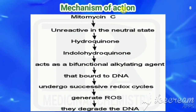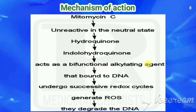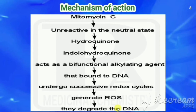Mitomycin C is unreactive in the neutral state. On chemical or enzymatic reduction, it is converted to a hydroquinone moiety, and by loss of methanol it is converted to indolohydroquinone. This acts as a bifunctional alkylating agent — it binds to DNA and undergoes successive redox cycles, generating reactive oxygen species (ROS): superoxide radical anion, hydrogen peroxide, and hydroxyl radical, which degrade the DNA.